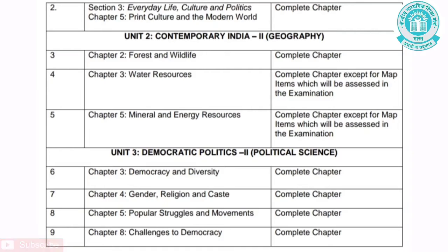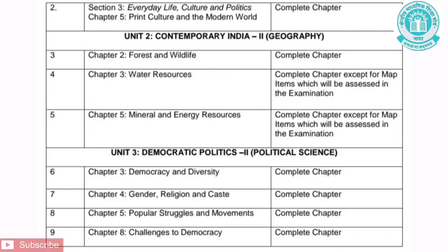Unit 2 is Contemporary India Part 2 — Geography. Under this unit, three chapters have changes: Chapter 2, Forest and Wildlife — the complete chapter has been removed. Chapter 3, Water Resources — the complete chapter has been removed except for map items, which will be assessed in the examination. Chapter 5, Mineral and Energy Resources — the complete chapter has been removed except for map items, which will be assessed in the examination.